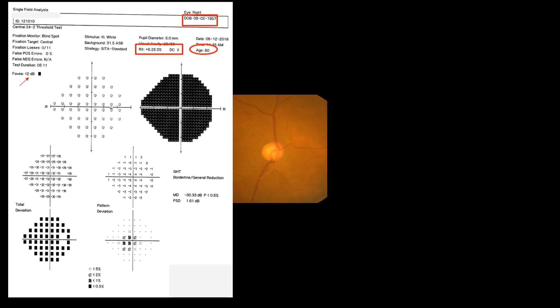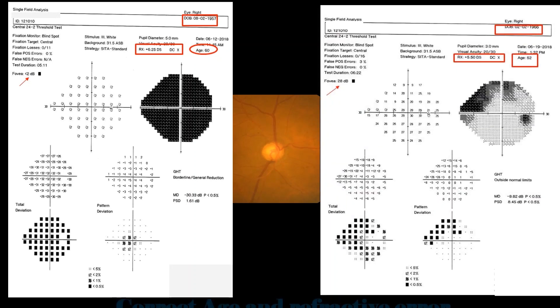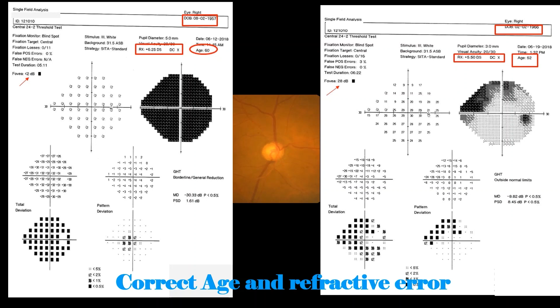This patient aged 60 years was tested with a correction lens of 6.25 diopters and showed diffuse loss of sensitivity at all the tested points. On repeating the test after entering the correct year of birth and refractive error correction, the visual field abnormality was accurately quantified and correlated with the optic disk findings.